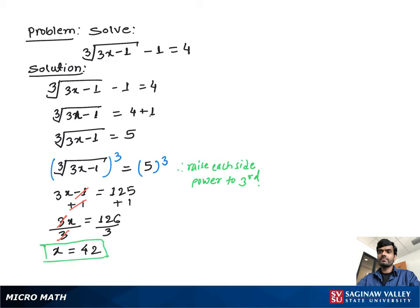Now let's check whether x equals 42 is the correct value by substituting it back into the original equation: cube root of (3x minus 1) minus 1 equals 4. Substituting, we write cube root of (3 times 42 minus 1) minus 1 equals 4.